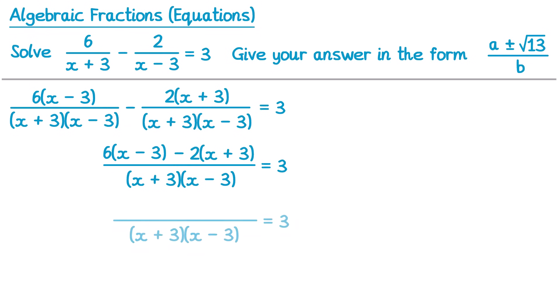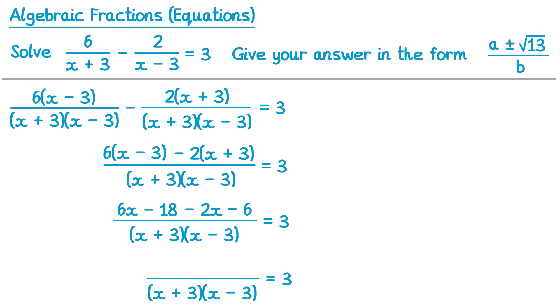Now we can expand out those brackets. On the top we've got 6 times x that's 6x, 6 times negative 3 that's negative 18, negative 2 times x that's negative 2x, and a negative 2 multiplied by a positive 3 that's a negative 6. Then we can collect those like terms. So on the top we've got 6x take 2x, that's 4x. And then negative 18 subtract 6, that's negative 24.